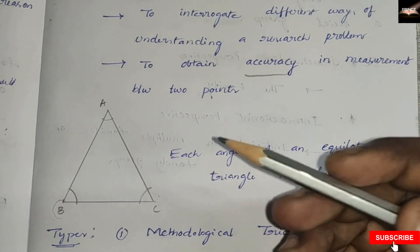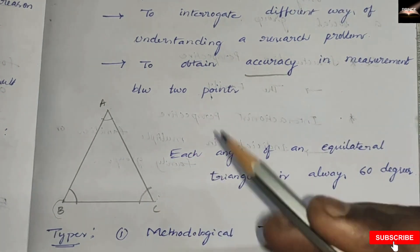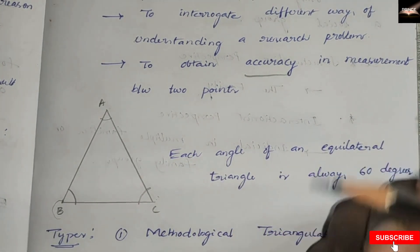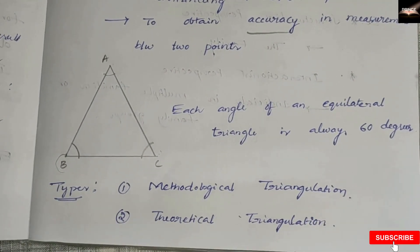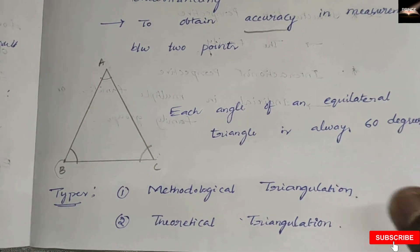We gather data using triangulation methods. There are mainly two types: methodological triangulation and theoretical triangulation. We'll discuss them one by one.